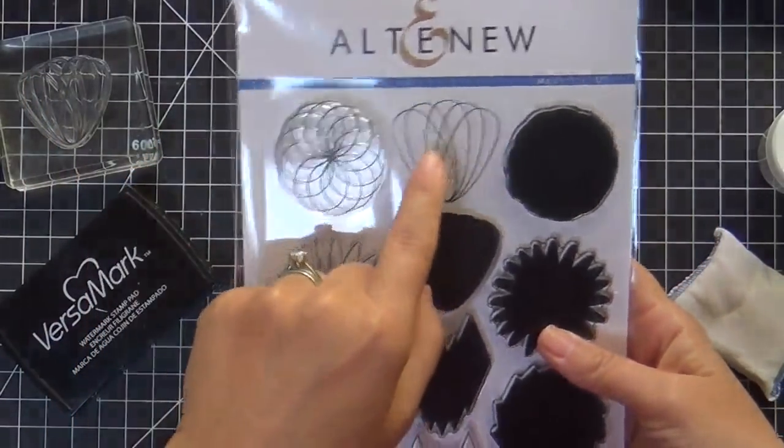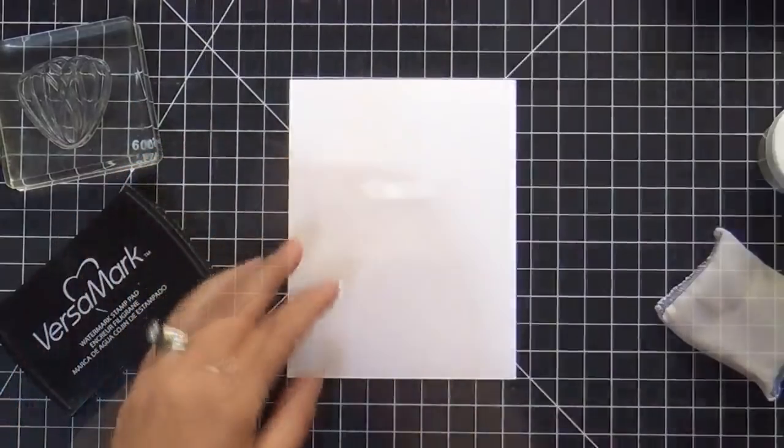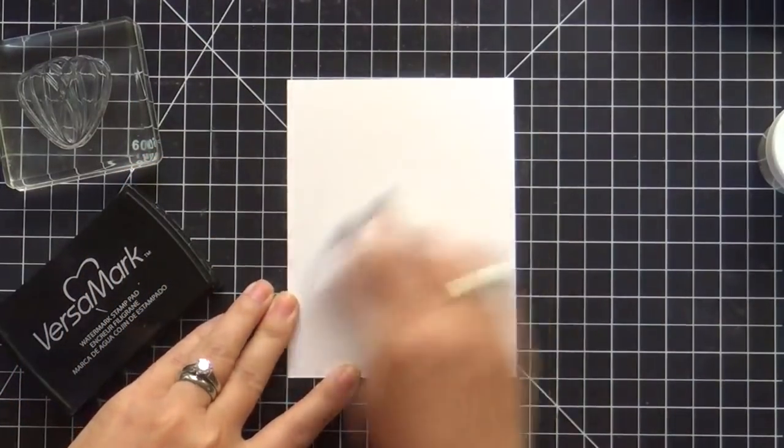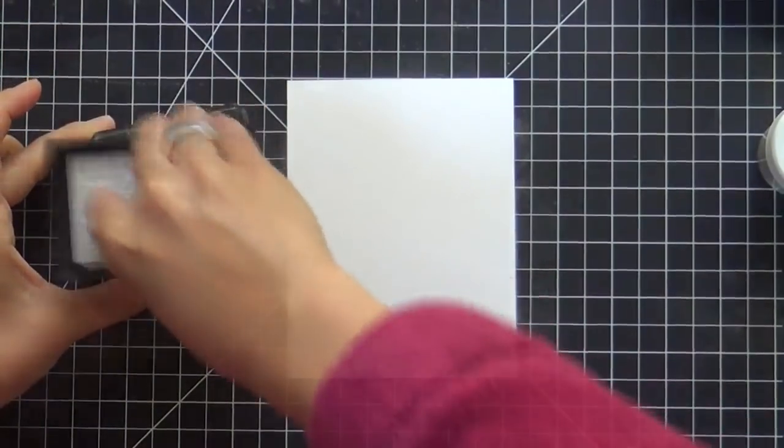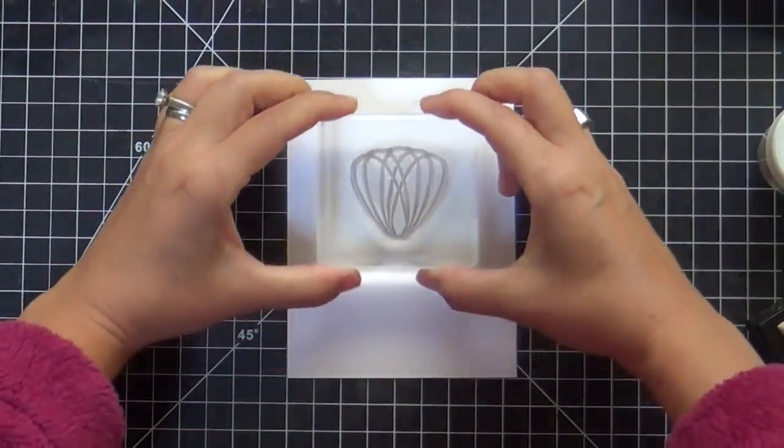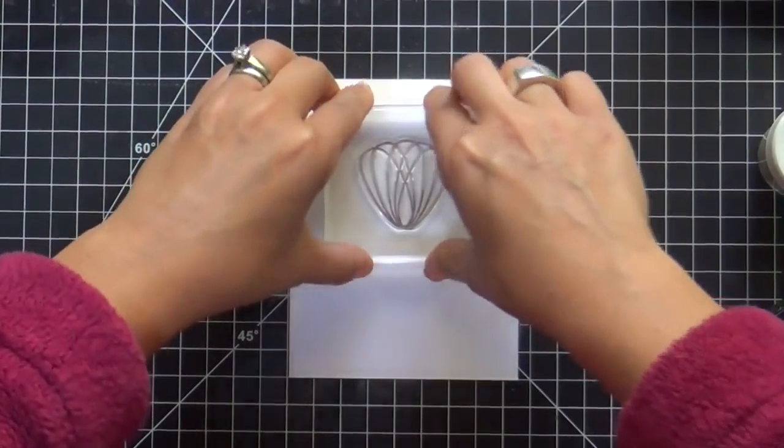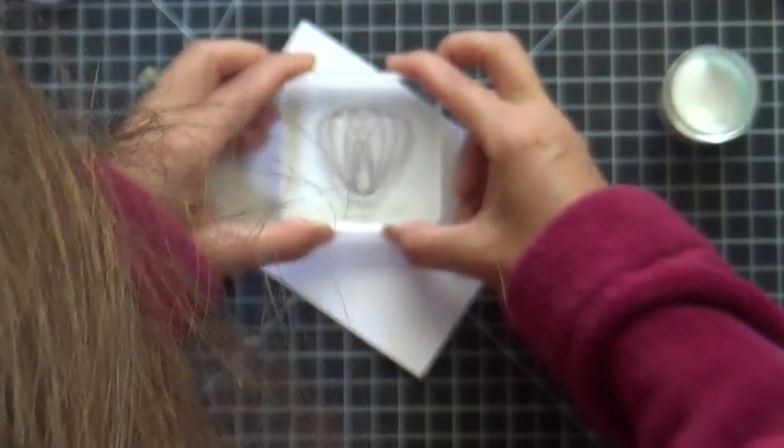Here's the stamp set. It's gorgeous with these great geometric designs. I'm taking just one of the spirally, almost floral petal shapes. I'm going to stamp that around and around, overlapping, until I go full circle.